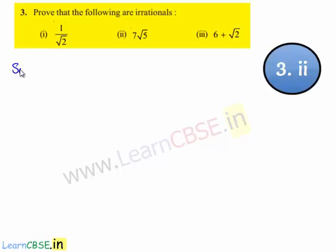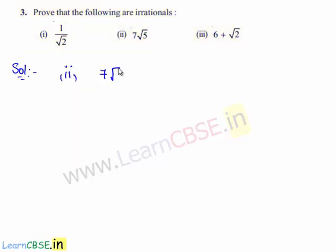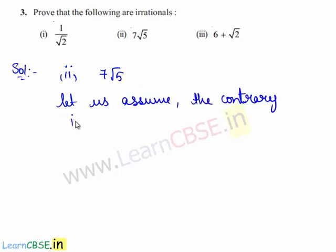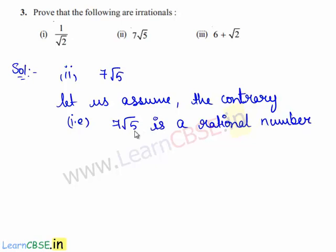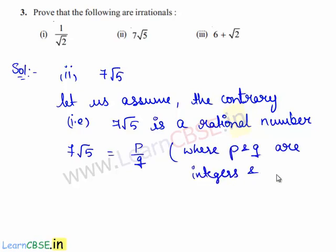Now let us move on to the solution of the second bit. We need to prove that 7 root 5 is an irrational number. So to prove 7 root 5 is an irrational number, let us assume the contrary — that is, 7 root 5 is a rational number. Since we have assumed that 7 root 5 is a rational number, 7 root 5 can be written in the form of p upon q, where p and q are integers and co-primes.